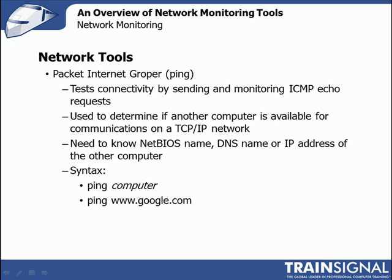In order to use PING, you only need to know either the NetBIOS name, the DNS name, or the IP address of the other computer. The syntax is very simple — it's just PING followed by the name of the computer. For example, if you wanted to test connectivity to Google, you would type in PING www.google.com.